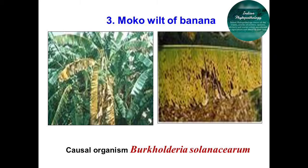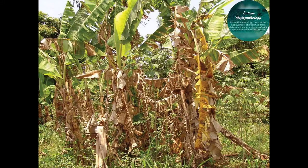In bacterial wilt, affected plants show rapid wilting and collapse, with premature ripening of fruit in severe infection. The infected stem shows discoloration of vascular strands with wilting and blackening of suckers — this is a particular mark of identification. The infected tissues exude dirty white or gray-brown slimy bacterial ooze from the infected portion.